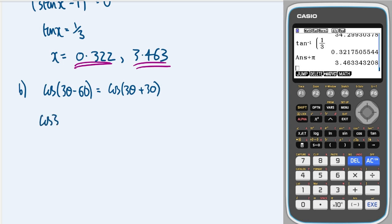cos3θ cos60 + sin3θ sin60 equals cos3θ cos30 minus sin3θ sin30.